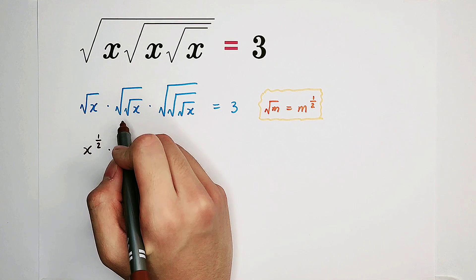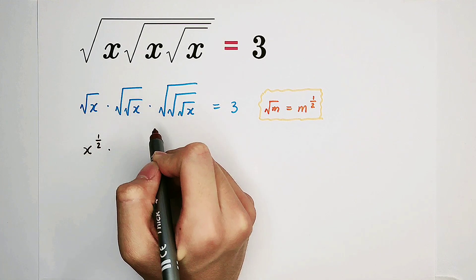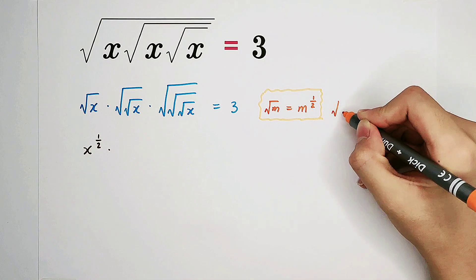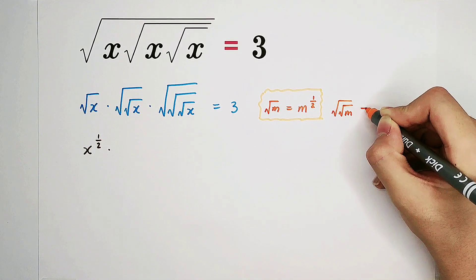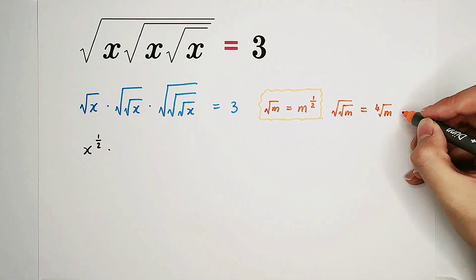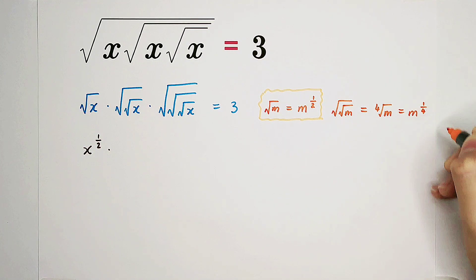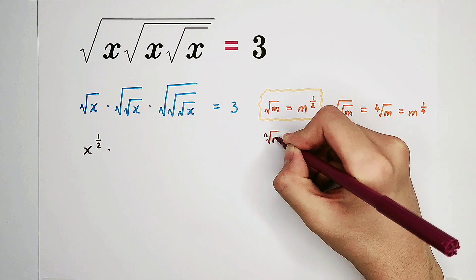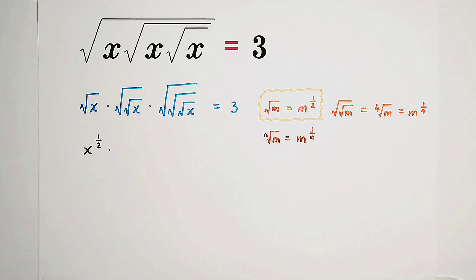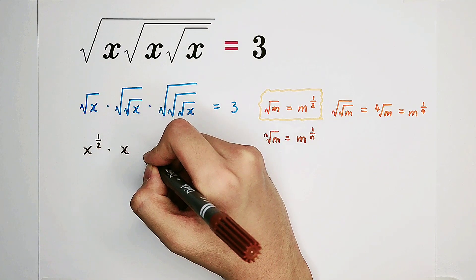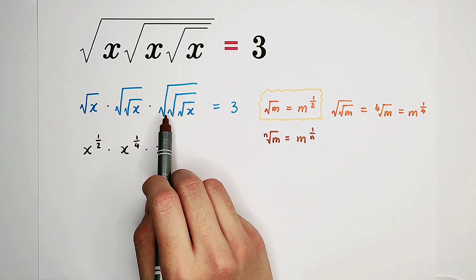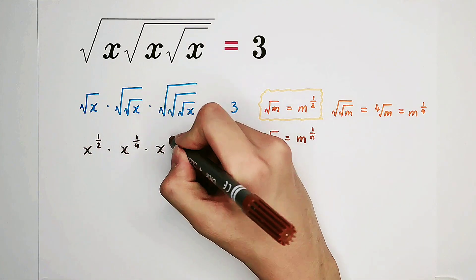This term is only x to the power of 1 over 2. What about this one? It has two square roots — two square roots is equal to the fourth root of m — so it has m to the power of 1 over 4. And in general, the nth root of m equals m to the power of 1 over n. So this one is x to the power of 1 over 4, and the triple square root is the eighth root of x — x to the power of 1 over 8.